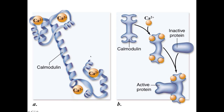There are numerous calcium-binding proteins that can cause a cellular response. One of them is calmodulin. The structure of calmodulin is a long alpha helix separated by two domains — one domain which binds two calcium ions and another domain which also binds two calcium ions. As its name implies, calmodulin is modulated by binding to calcium.